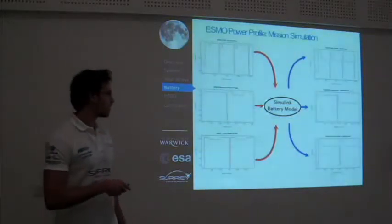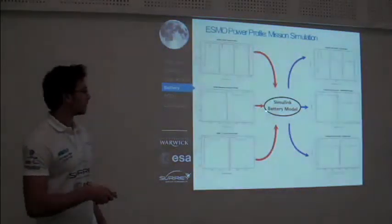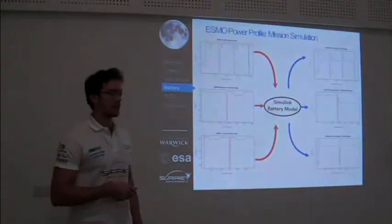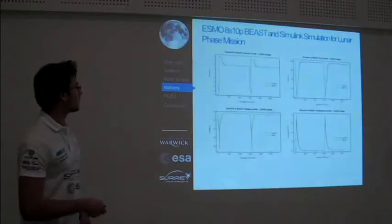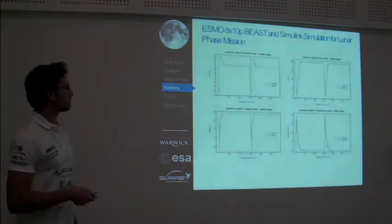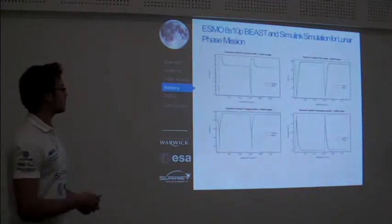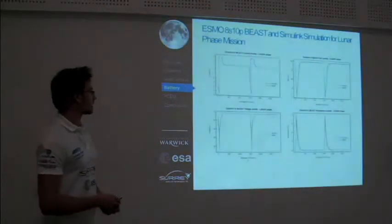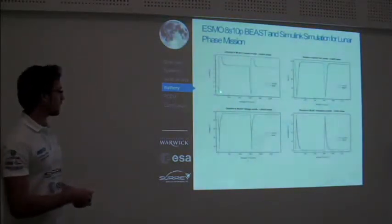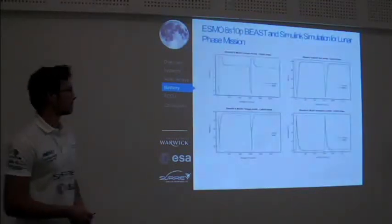We fed our profile into our signaling battery model, and this generates typical behavior for the battery for these missions. Here we're focusing on the final phase of the mission, which is the lunar phase. From the current and voltage profiles, the battery will reach about 15 amps discharge and a minimum voltage of about 24 volts.